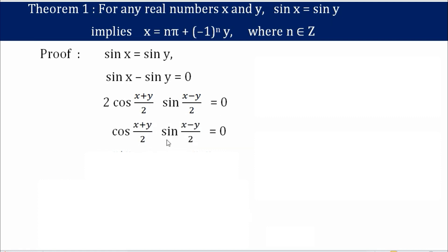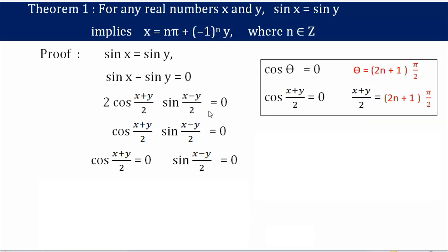What remains is cos((x+y)/2) times sin((x-y)/2) equals 0. Now I can equate each factor to zero: cos((x+y)/2) equals 0, and sin((x-y)/2) equals 0. Notice that cos((x+y)/2) equals 0 resembles cos θ equals 0. For cos θ equals 0, we have θ equals (2n+1)π/2. So here, x plus y divided by 2 equals (2n+1)π/2.